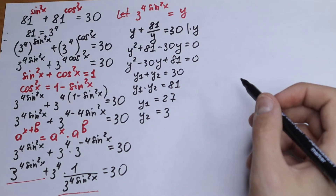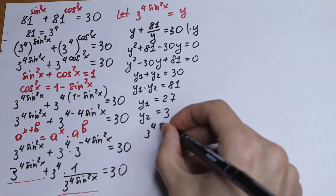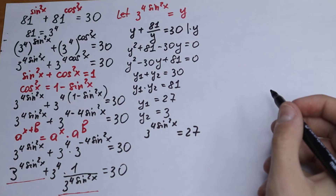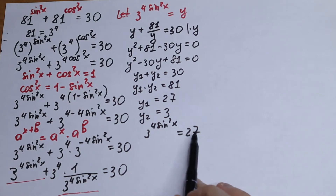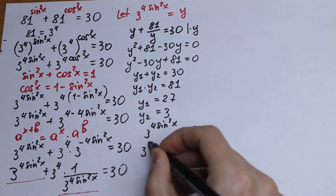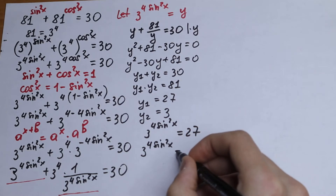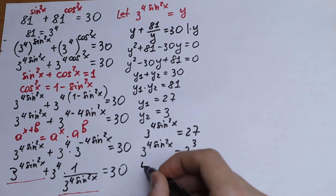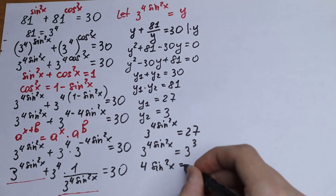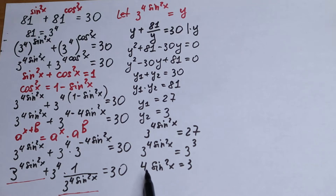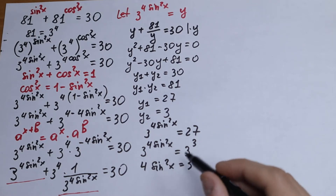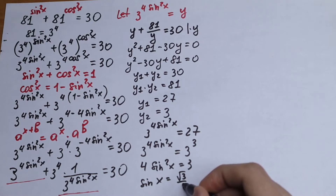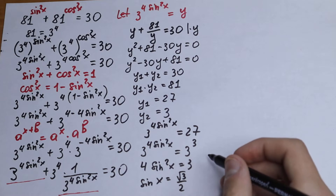Let's write the first case. We have 3 to the power 4sin²x equal to 27. This is a classic exponential equation — we express 27 as 3 cubed. So 3 to the power 4sin²x equals 3 cubed. With the same base, we equate exponents: 4sin²x = 3.